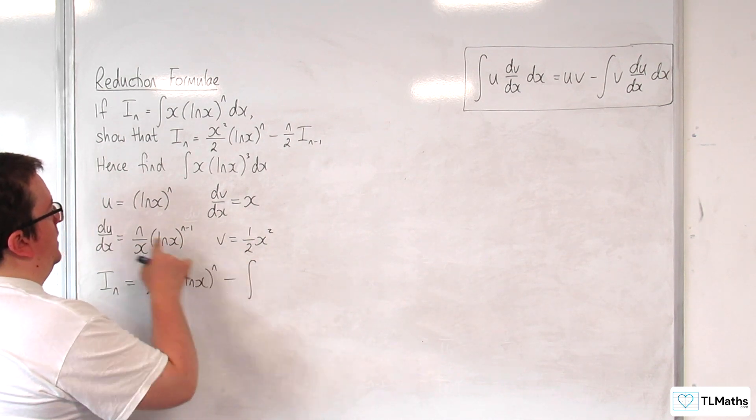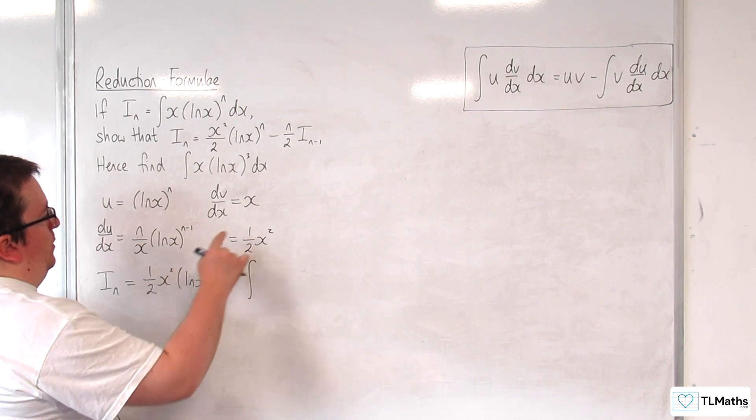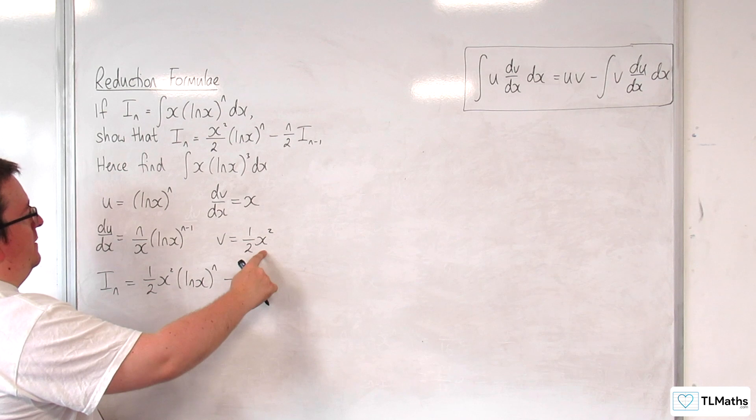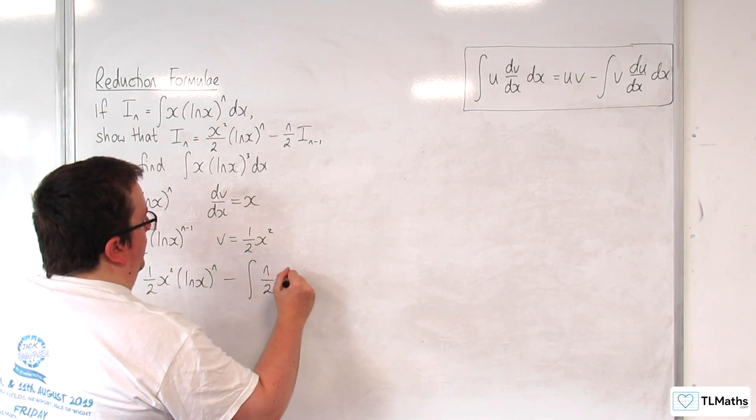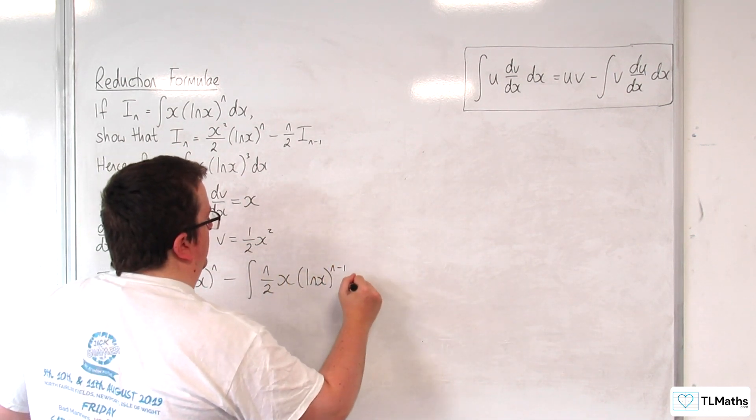Now we've got the 1 half times the n over x there, so we're going to have n over 2x, but we're also multiplying by the x squared. So it'll actually be n over 2 times x log of x to the n minus 1 dx.